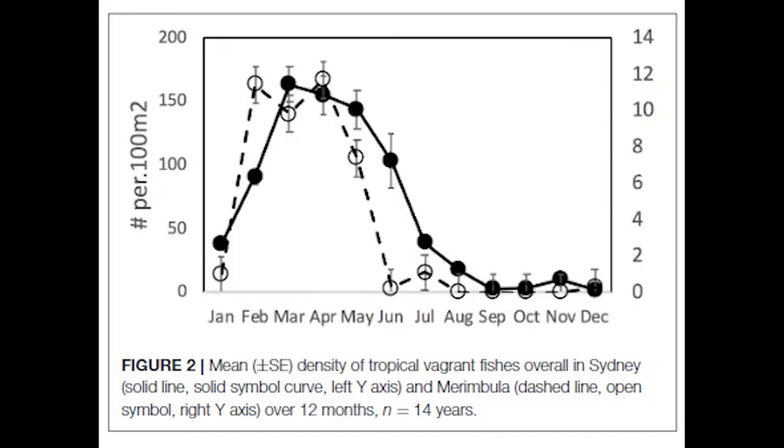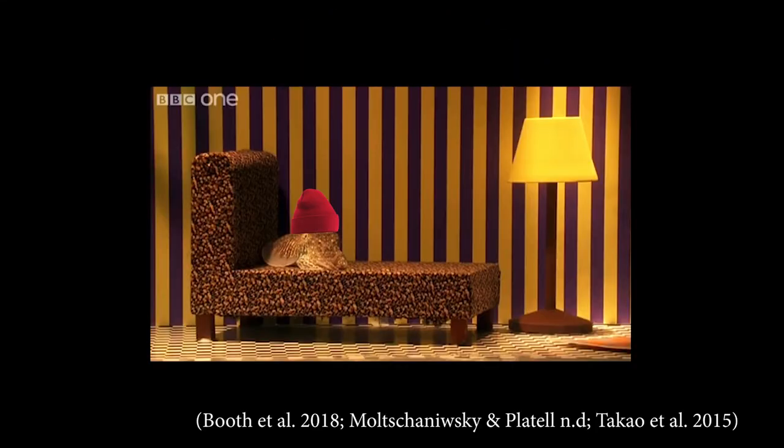However, as these waters cool off during winter, so do the tropical vagrants — and they all die. This defines tropical vagrants in that they don't make a permanent impact on the ecosystem, only occurring during specific times of the year.